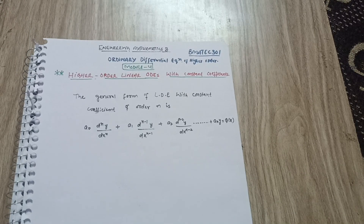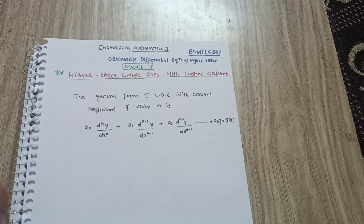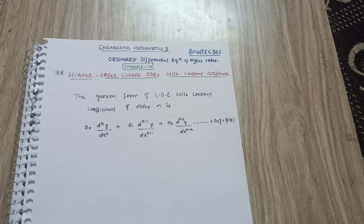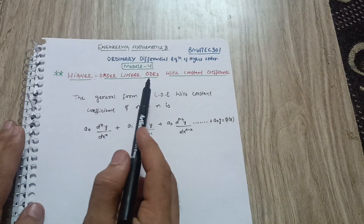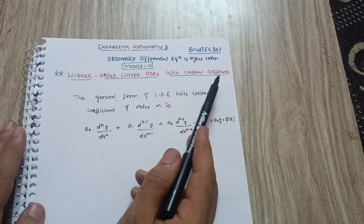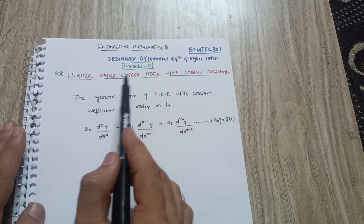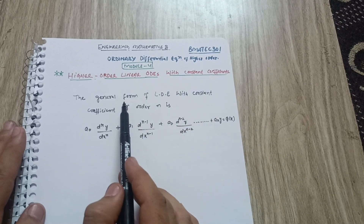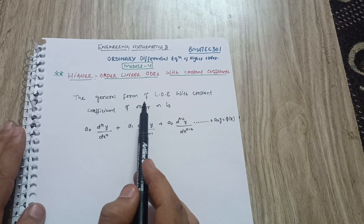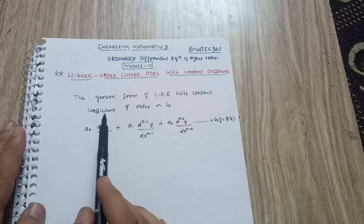Hello everyone, welcome back to my channel. Hope you are all doing well. Today I am going to start Module 4 of Mathematics — Engineering Mathematics 3 — for EC branch students. The first topic is higher order linear differential equations with constant coefficients. You have some questions to solve from the model question papers.